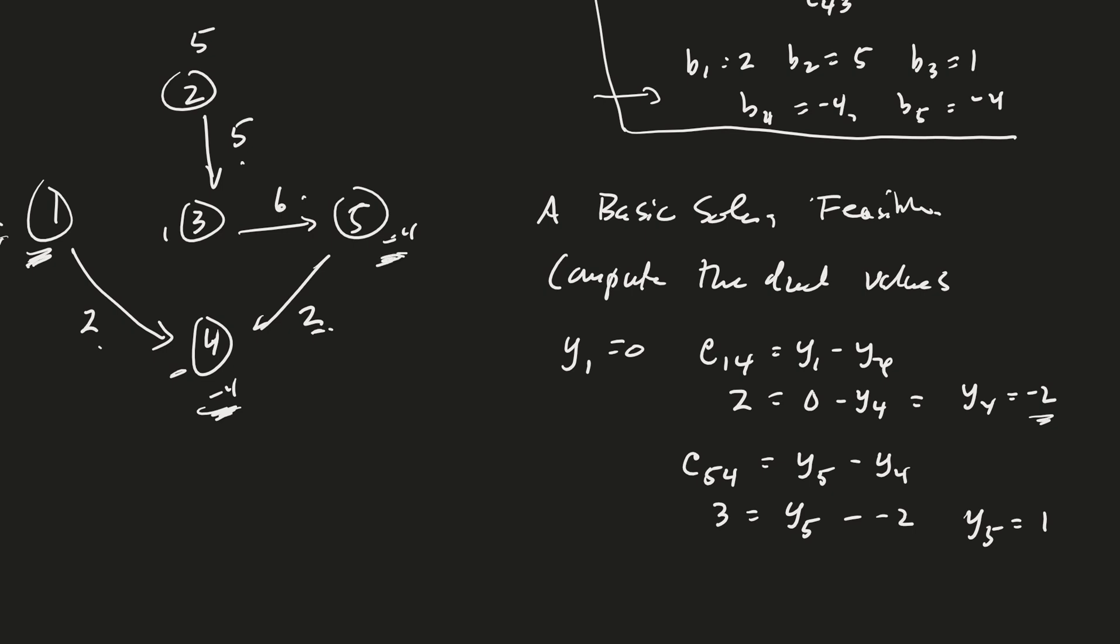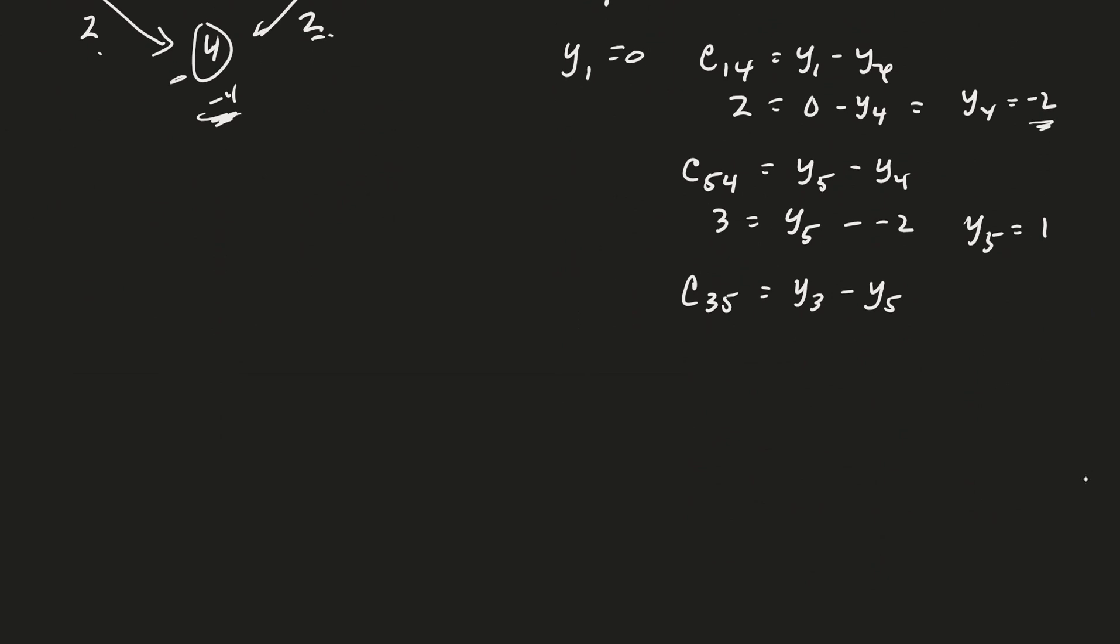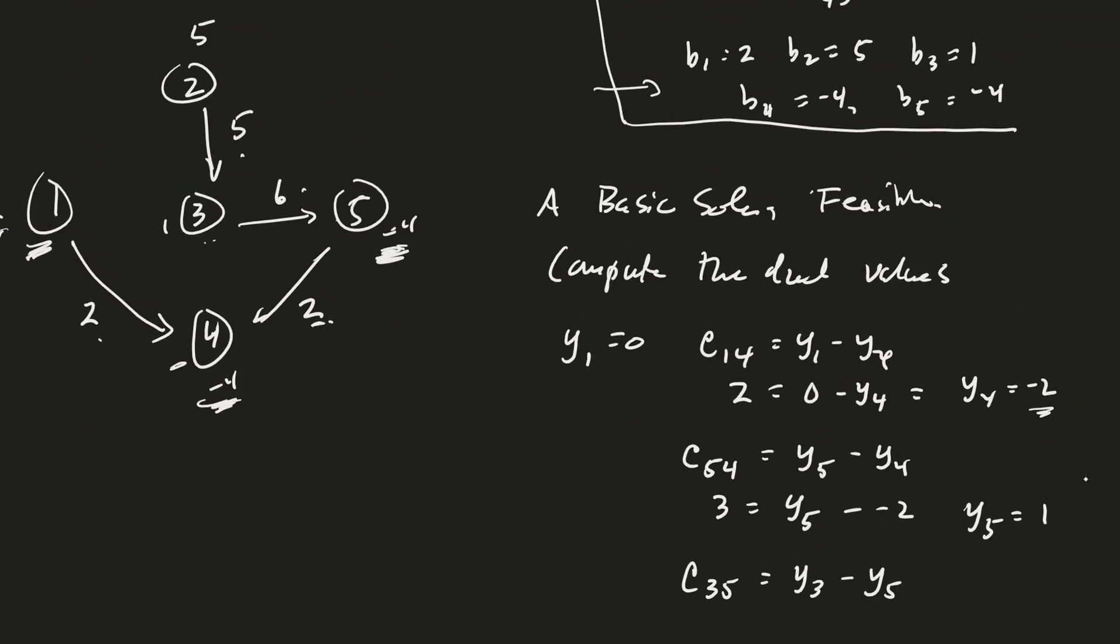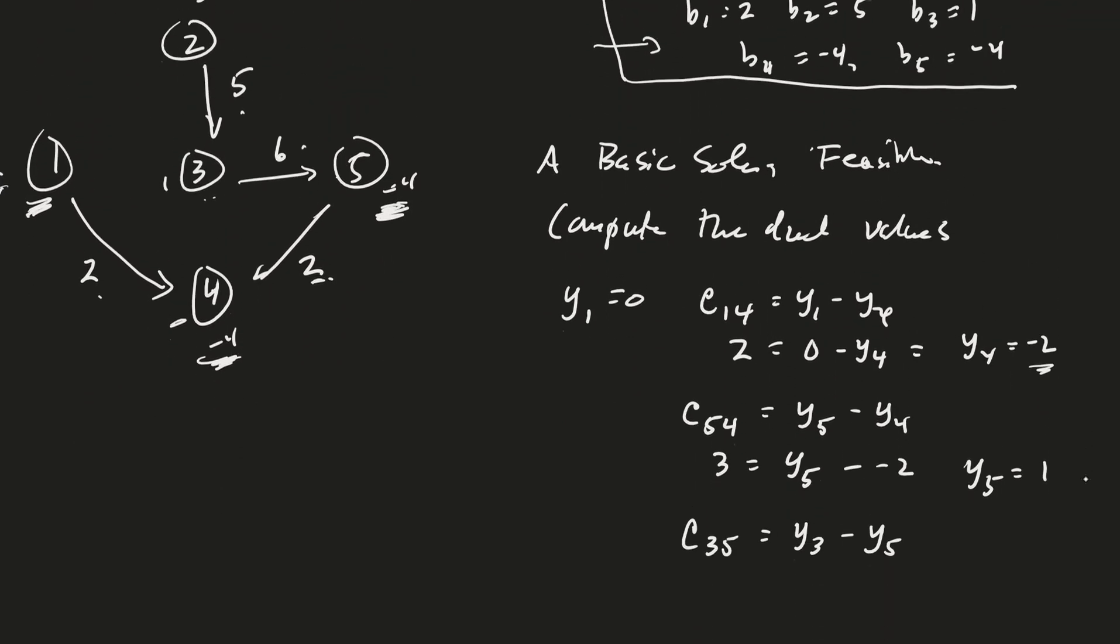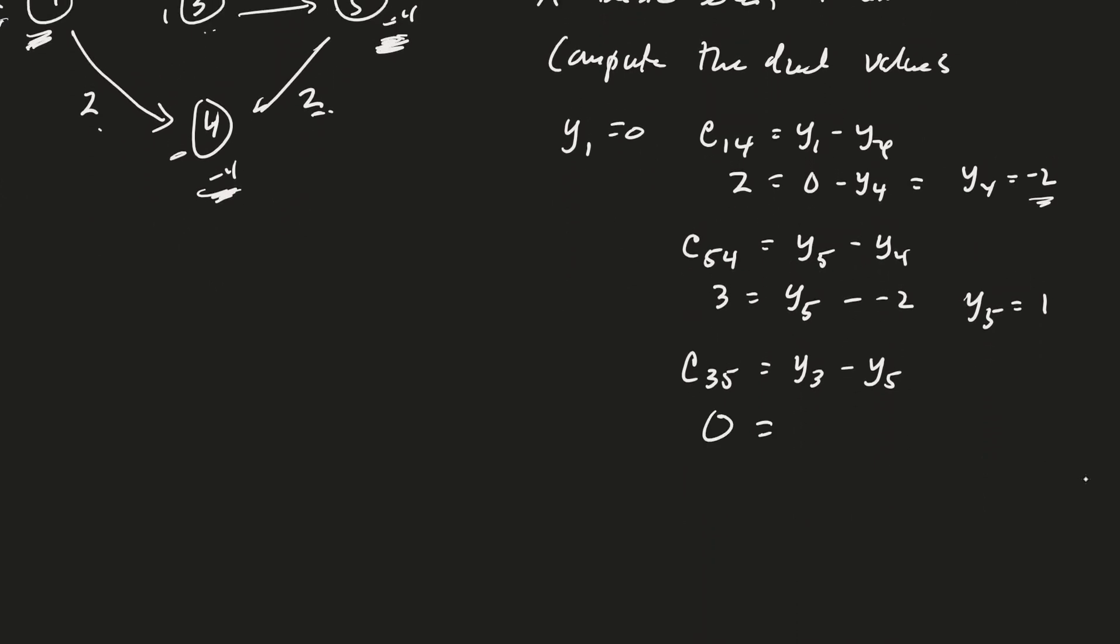Good. So I've computed that one. Now, the arc from 3 to 5 is next. So c35 is equal to y3 minus y5. And I've got the y5 value there. c35 is 0. So that's a cheap edge. And then y3 is my unknown. And y5 is 1. Good. So therefore, y3 is equal to 1.